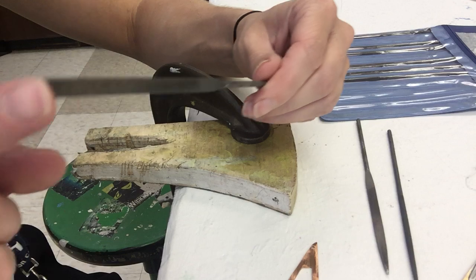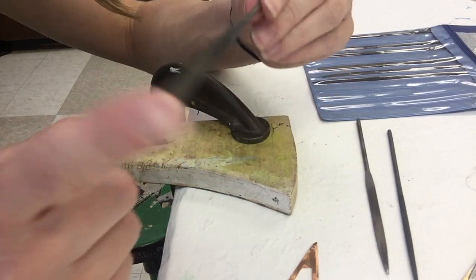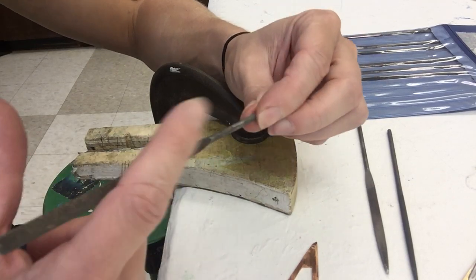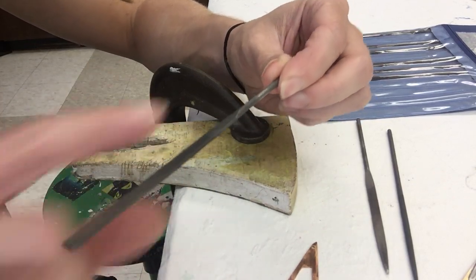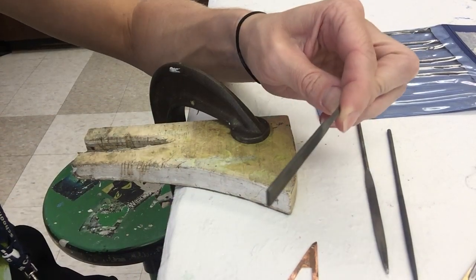So files are these pieces of metal that are harder than the soft metals that we're working with, copper, nickel, and brass, and they have these little teeth on one side, well on both sides here, and then they have a handle on the other side. So you always hold it where that handle is.